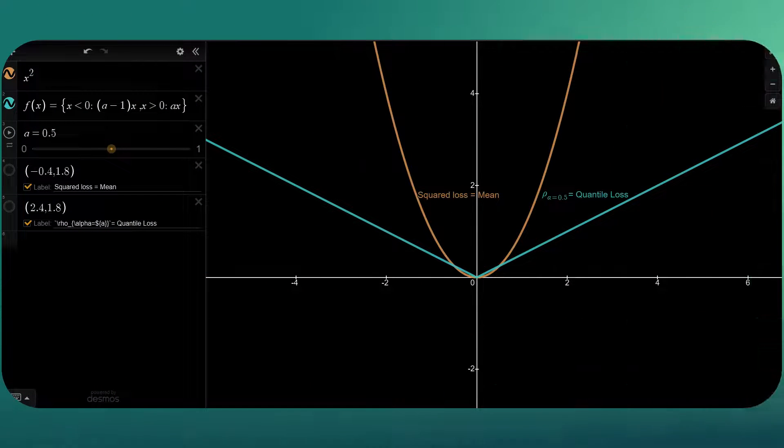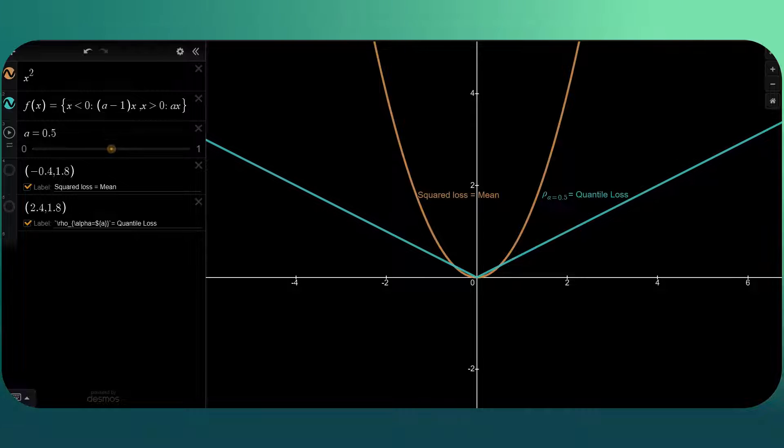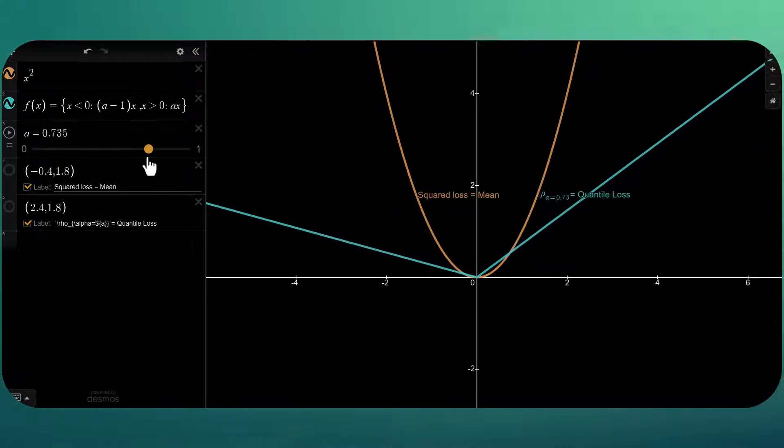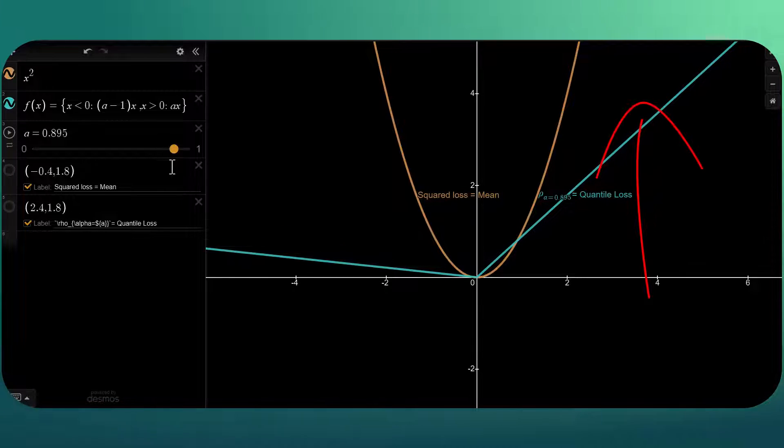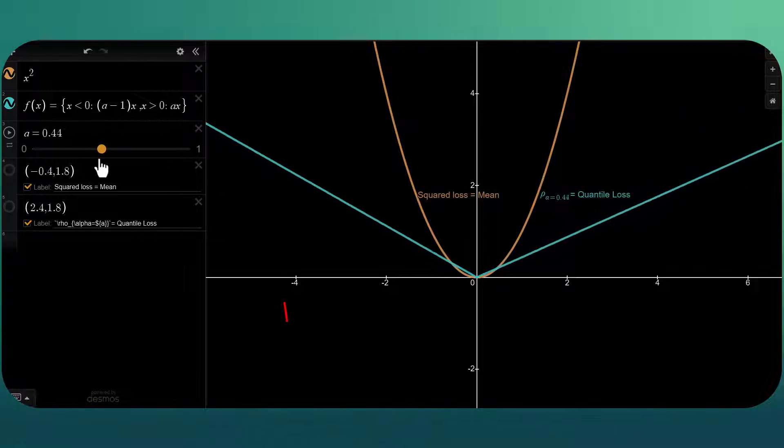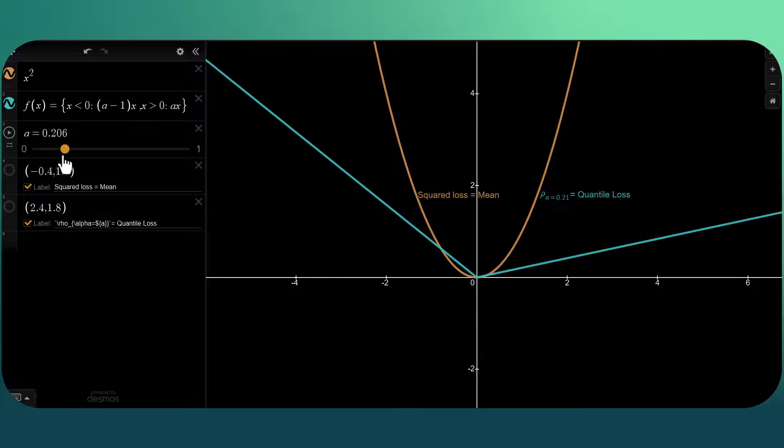Let's view it in a graph, as it will be more intuitive. In this graph, you can see the squared error and the quantile error. Notice that when I move the quantile, the error changes. Sometimes it gives more error to positive examples, and sometimes to negative examples.